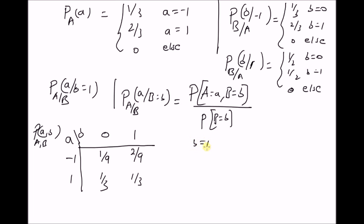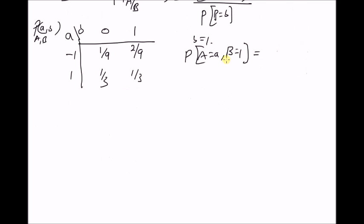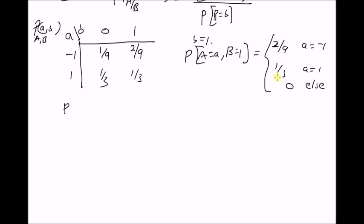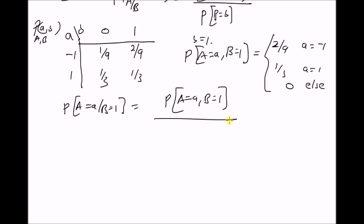For B equal to 1, the joint probability mass function P(A=a, B=1) can be determined as follows. The probability of A and B equal to 1 gives values 2/9 for A equal to minus 1 and 1/3 for A equal to plus 1, and 0 elsewhere. To find the conditional probability, we need to normalize this function by dividing by the sum over all values of A of P(A=a, B=1).